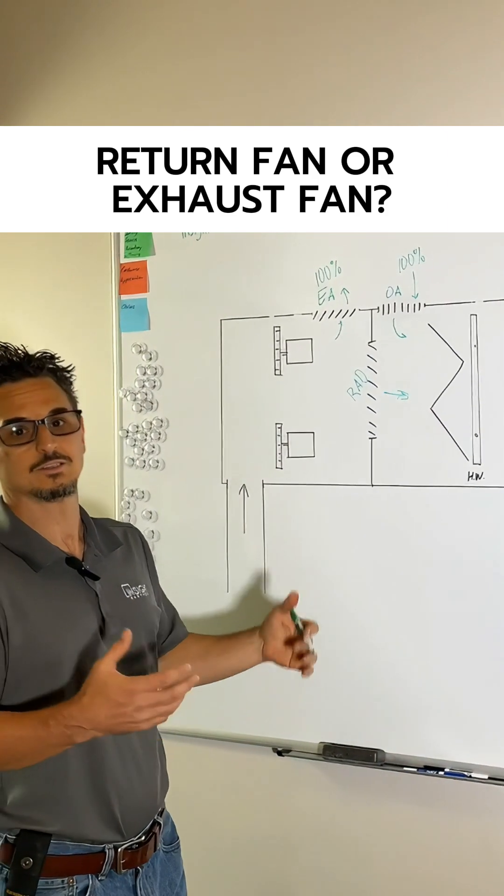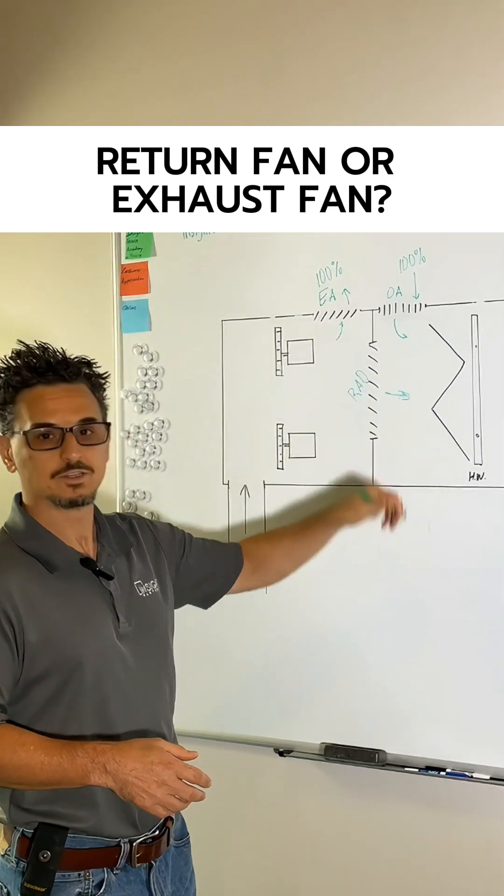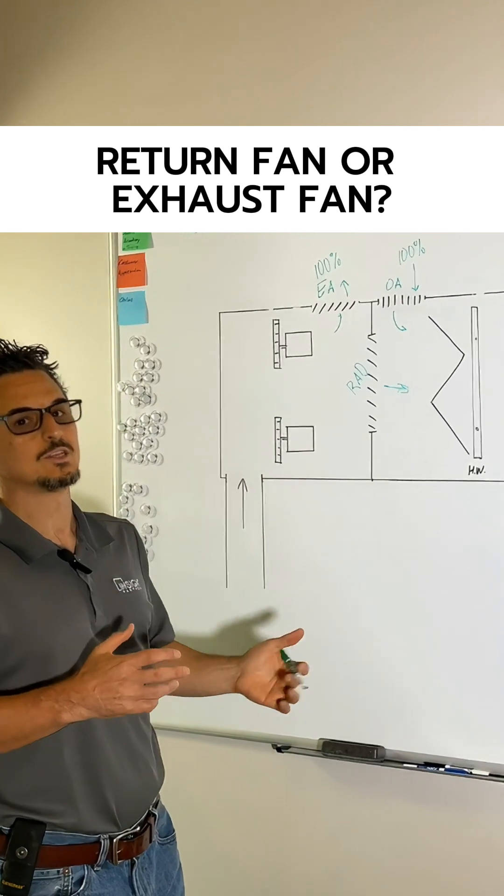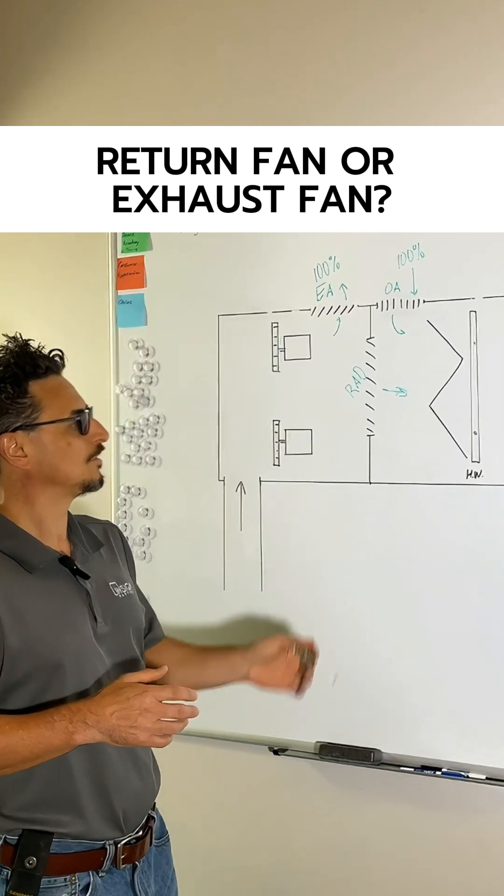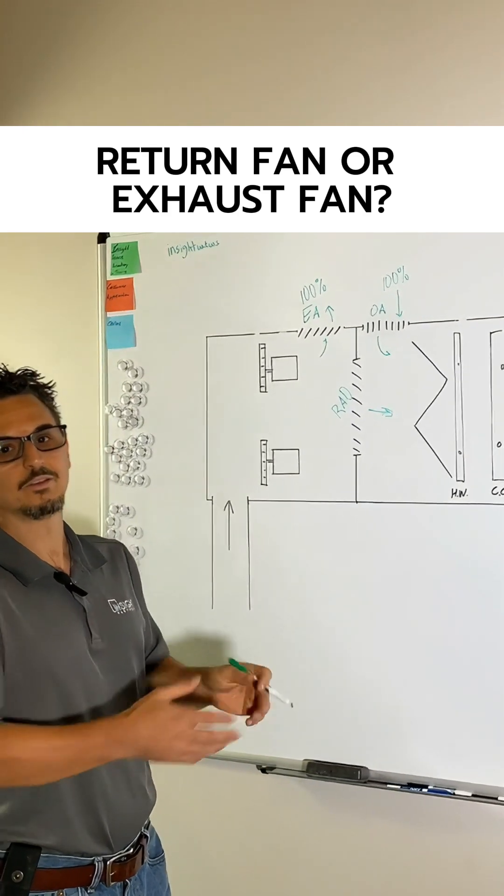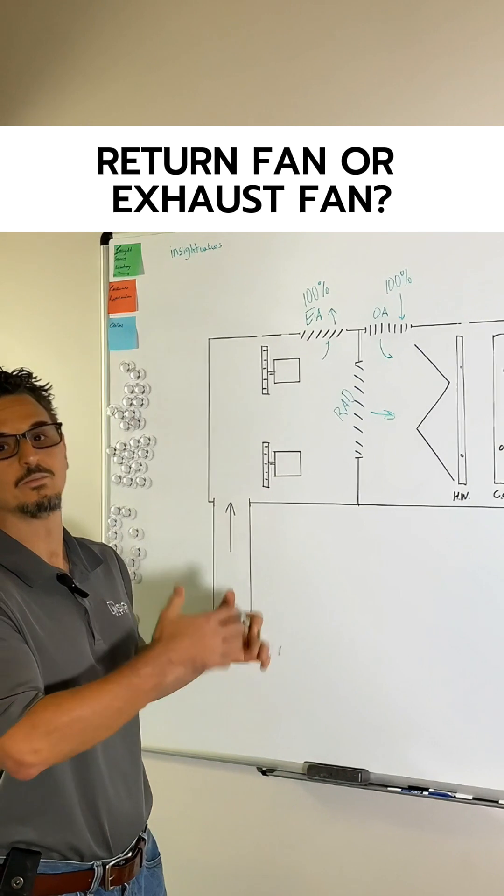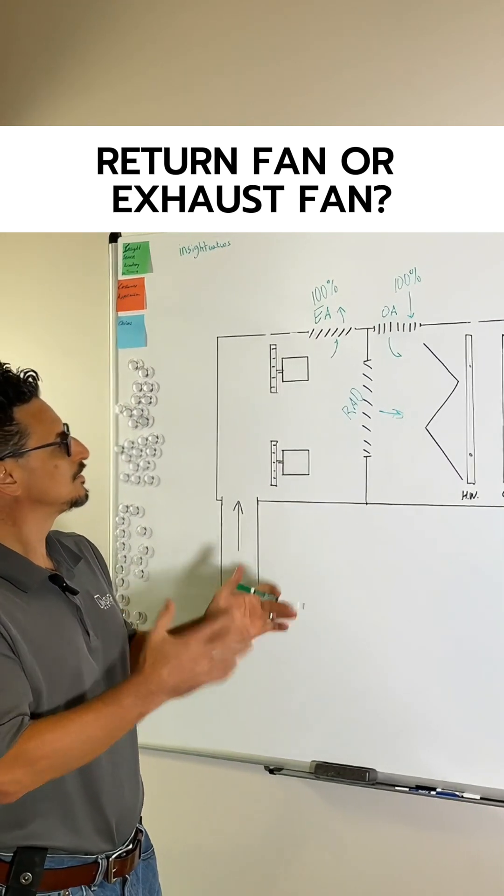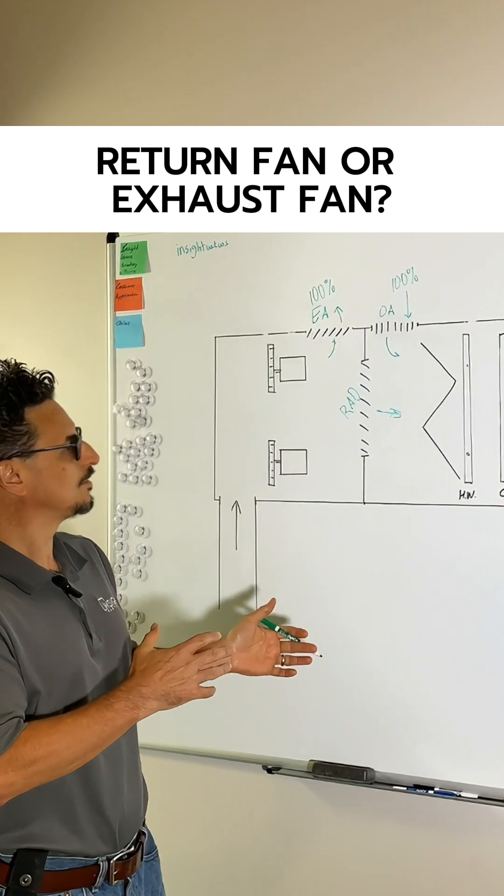Also allows you to break up the fan brake horsepower into two different banks, which is nice because you can imagine if you had a 20,000 CFM unit and you have 12-inch filters in here, you know, and it's a five-story building, you can imagine how much static pressure you're getting built up in that system. So it's nice to break up the fan horsepower into smaller increments. It's easier for maintenance and it's more efficient when you do that. So we talked about building pressure, we talked about efficiency, we talked about economizer.